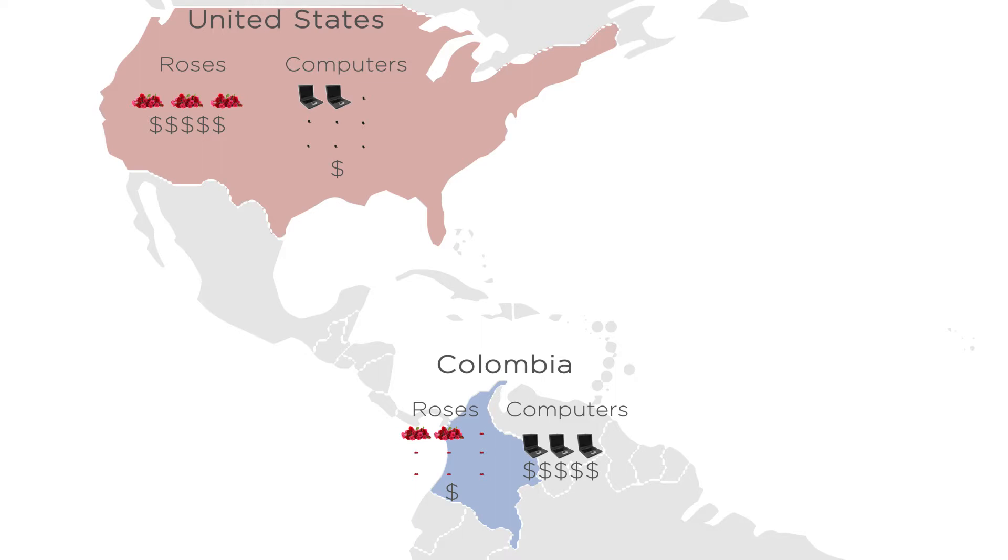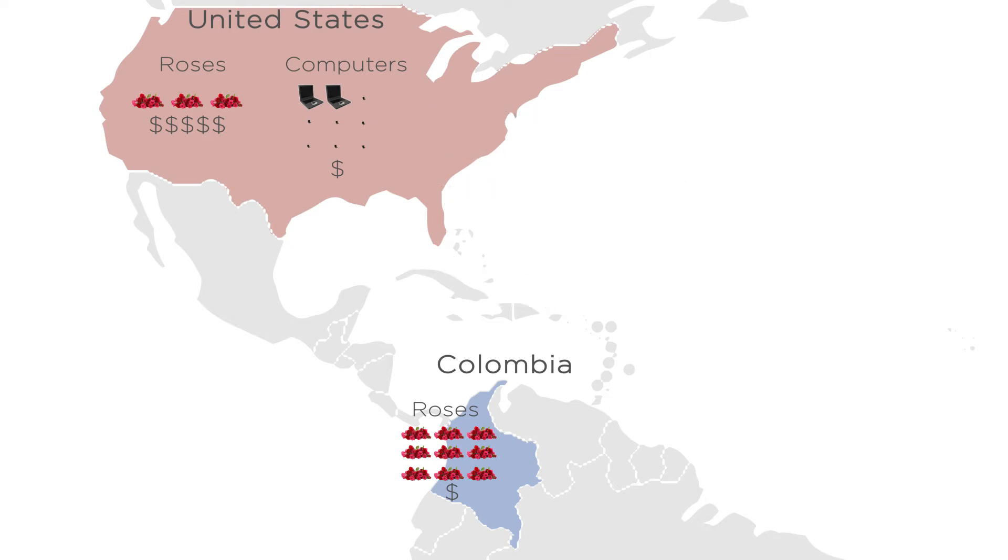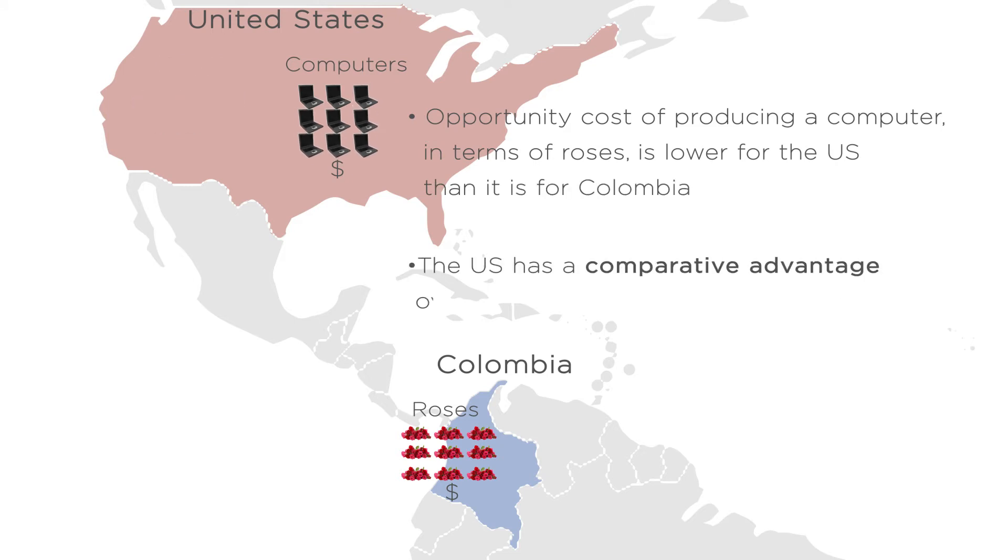In economic terms, we say that the opportunity cost of producing a rose in terms of computers that could have been produced instead is lower for Colombia than it is for the U.S. So we say that Colombia has a comparative advantage over the U.S. in rose production. And the flip side is that the opportunity cost of producing a computer in terms of roses that could have been produced instead is lower for the U.S. than it is for Colombia. The U.S. has a comparative advantage over Colombia in computer production.